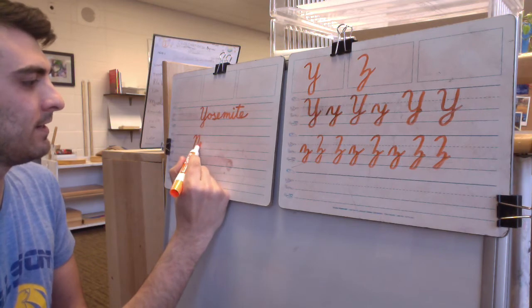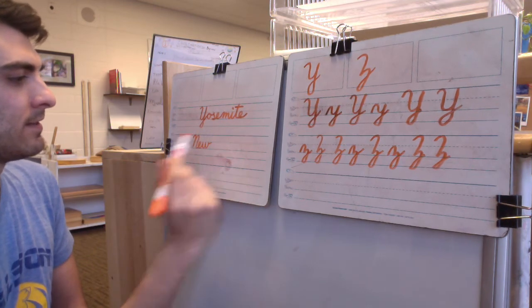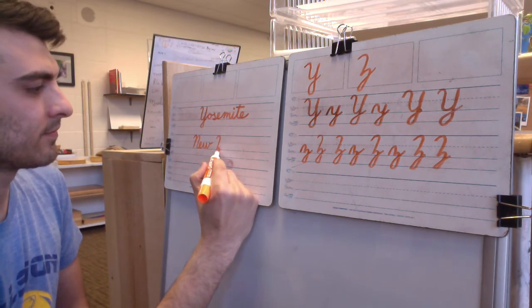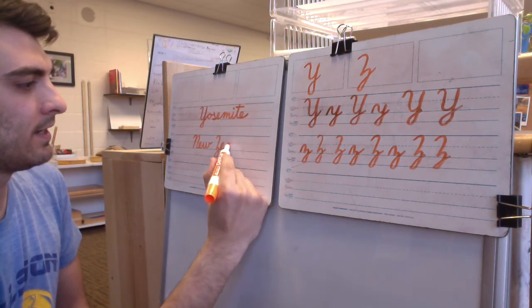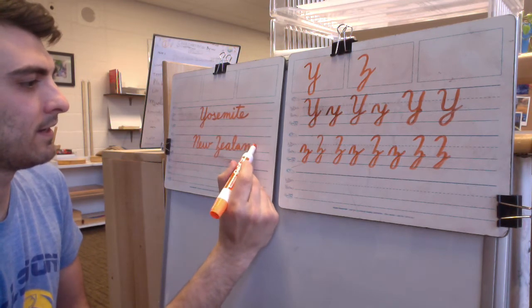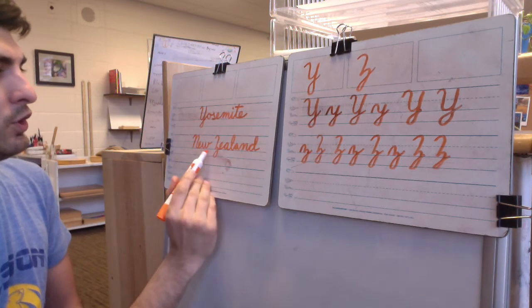How about we do Yosemite, beautiful National Park. Capital Y. It ends down here, so I'm going to connect directly to the O. Y-O-S-E-M-I-T-E. Yosemite. Our Z. This was our lowercase Z. The uppercase is just like the Y, it just starts up at the plain line. So we'll get to practice an uppercase N again. N-E-W, uppercase Z, E-A-L-A-N-D. New Zealand.